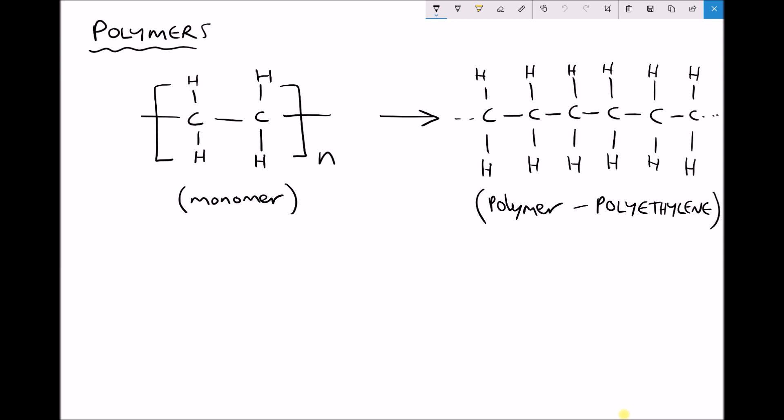Now the length of these polymer chains can vary from being very short to very long continuous chains, and when we have these long single chains this is called the backbone of the polymer. So in here the carbon atoms form the backbone.